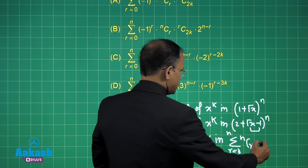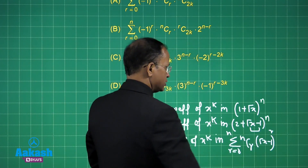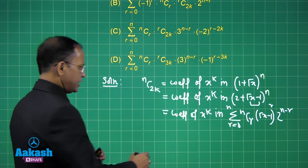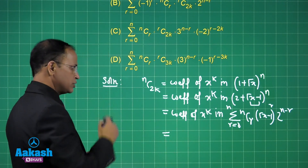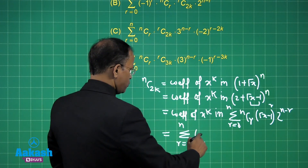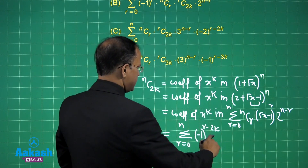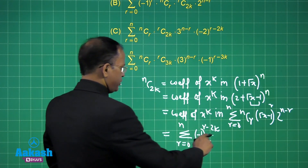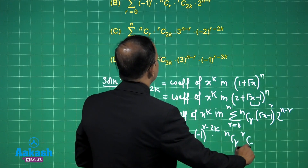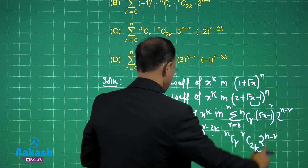Taking nCr, this becomes (√x − 1) raised to the power r, multiplied by 2 raised to the power (n − r). For the coefficient part, this becomes the sum from r = 0 to n of (−1) to the power r, and we have 2k. So we have nCr times rC2k times 2 to the power (n − r).